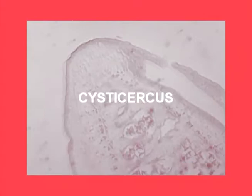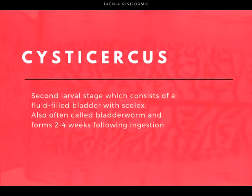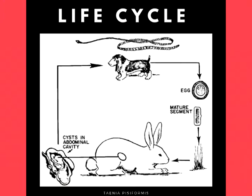Taenia pisiformis typically prefers the liver and other viscera. The hexacanth embryo grows, cavitates, and differentiates to form the second larval stage, which consists of a fluid-filled bladder with a scolex called a cysticercus. This second larval stage is often called a bladder worm and forms two to four weeks following ingestion. The cysticercus stage persists on the liver capsule or other abdominal serosal surfaces and is ingested by the definitive host when it consumes the intermediate host. As seen in the picture,